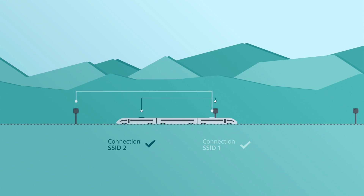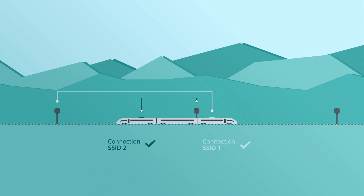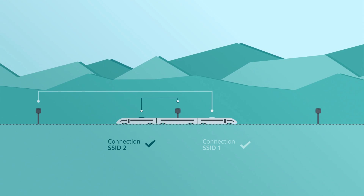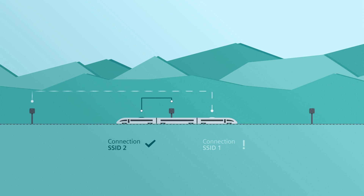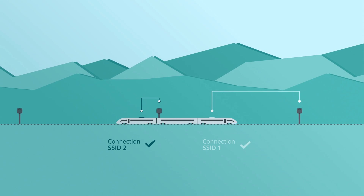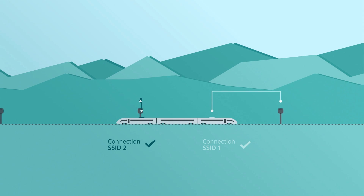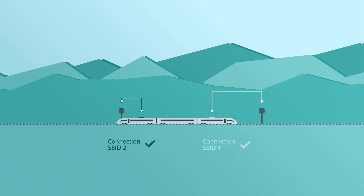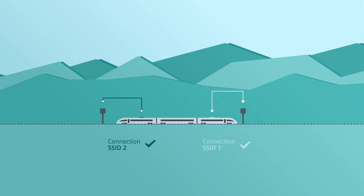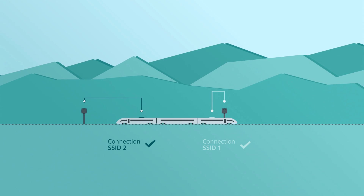In our example, this looks like this. Client 1 leaves the range of access point 1 as the train moves. Automatically, it starts looking for a better signal. This is in most cases the route's next access point. As soon as it has found a better signal, the roaming process starts and the connection is set up.